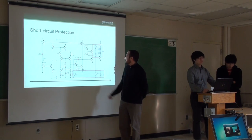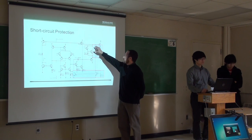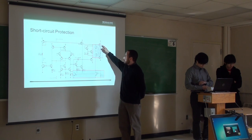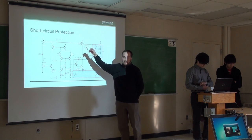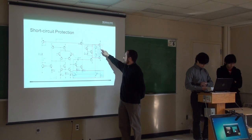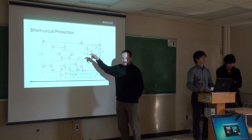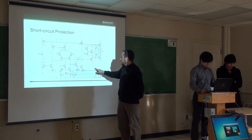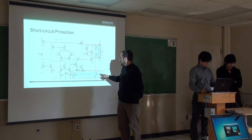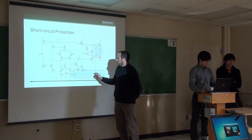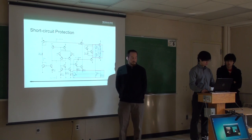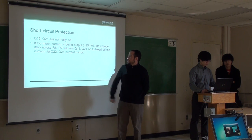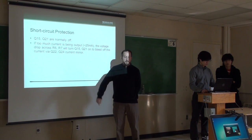For short circuit protection, these transistors are normally off. But if the output transistors start conducting more current than allowed — approximately 25 milliamps — the current goes through these resistors, providing a voltage drop of about 0.675 volts, which turns on these protection transistors, bleeding off excess current through another current mirror and providing feedback to the entire circuit. I'll turn it over to Alex, who will talk about applications.